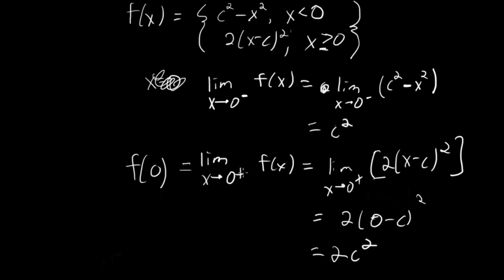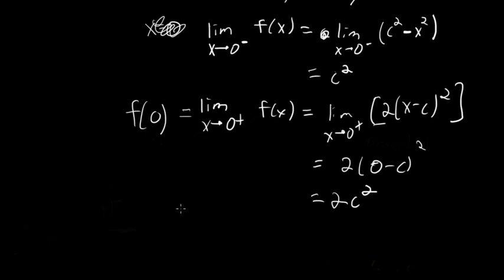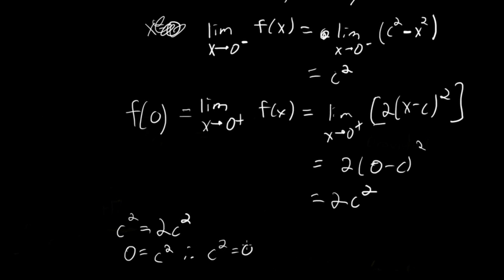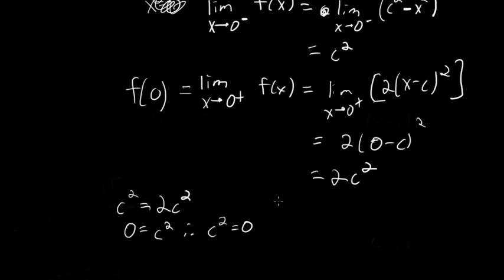To find the value of c that makes f continuous at 0, we just have to set the left and right limits equal to one another. That amounts to setting c squared equal to 2c squared. Subtracting c squared from both sides gives 0 equals c squared, or c squared equals 0. If something squared equals 0, the something itself must be 0, so this implies that c equals 0.